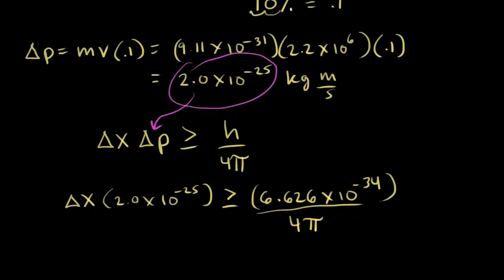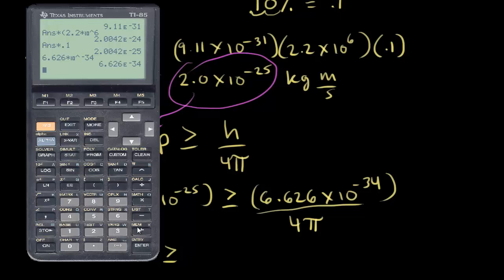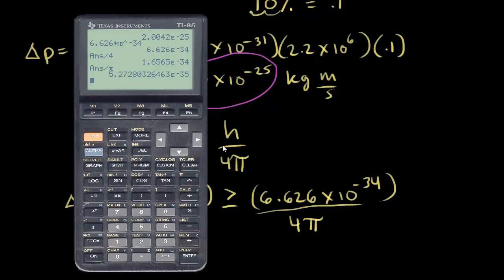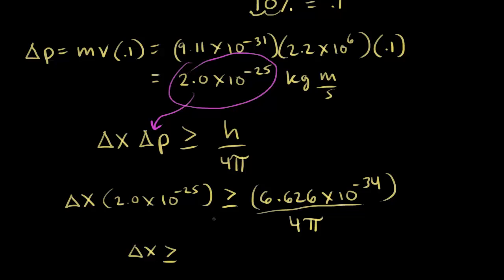Solving for delta x, we divide Planck's constant — 6.626 times 10 to the negative 34 — by 4, then by pi, then by the uncertainty in the momentum, 2.0 times 10 to the negative 25. This gives us 2.6 times 10 to the negative 10. So the uncertainty in position must be greater than or equal to 2.6 times 10 to the negative 10 meters.